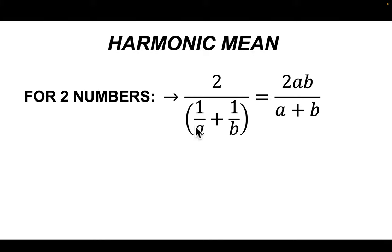For two numbers, you saw this happen. It's two over one over a plus one over b. It simplifies to two ab over a plus b. You just saw that happen. Right?